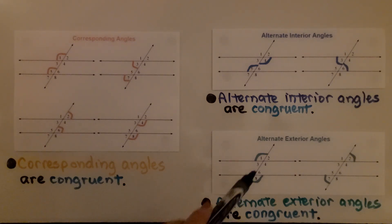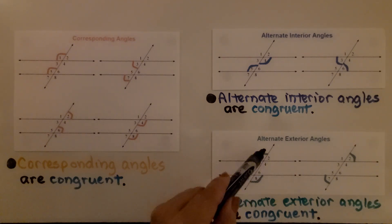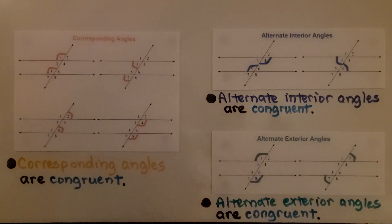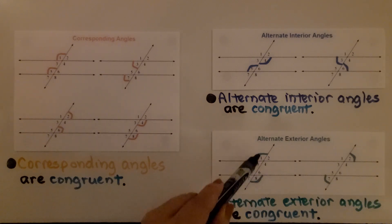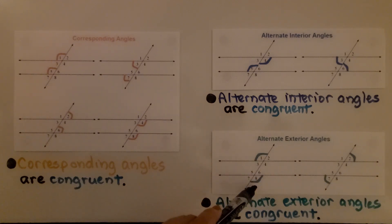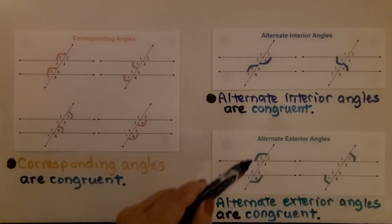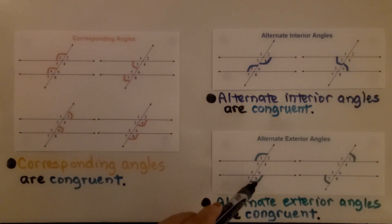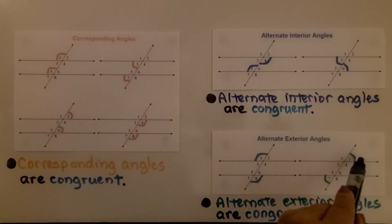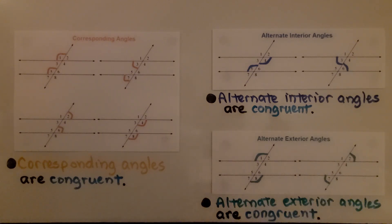Alternate exterior angles are congruent. If we measured angles one and eight, they would have the same measure. And if we measured angles two and seven, they would also have the same measure. They're congruent.